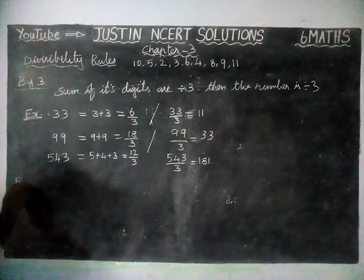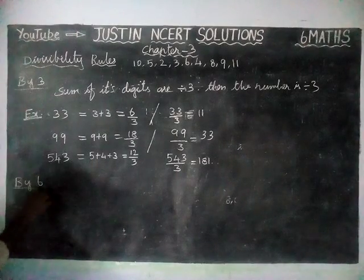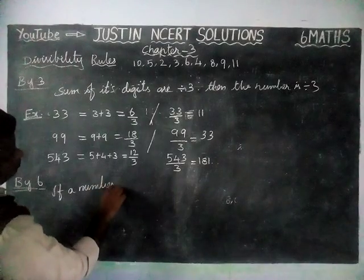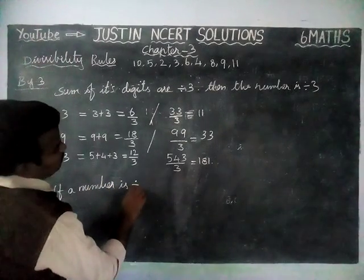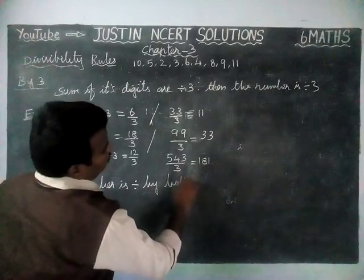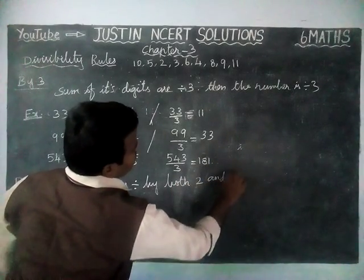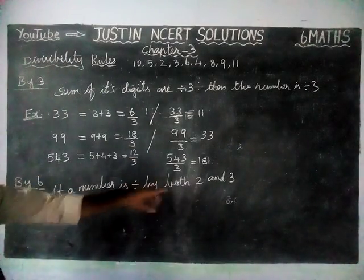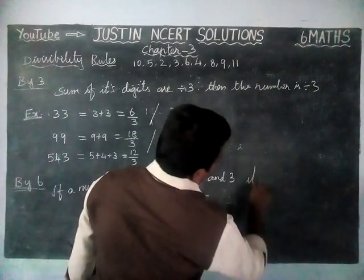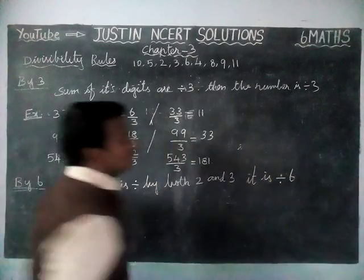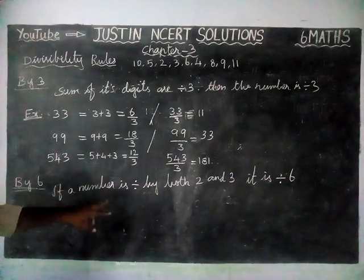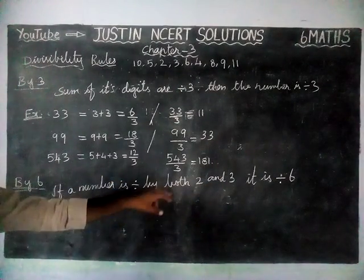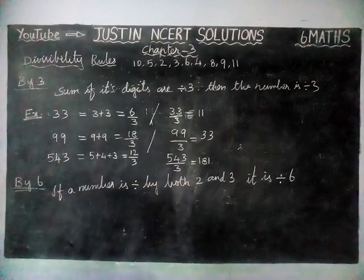Next, divisibility by 6. If a number is divisible by both 2 and 3, then it is divisible by 6 also. If a number is divisible by only 2, it is not divisible by 6. Only when a number is divisible by both 2 and 3 is it divisible by 6.